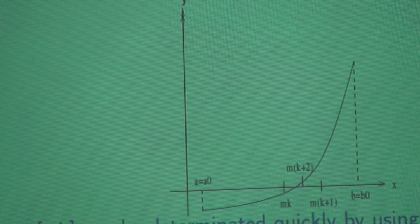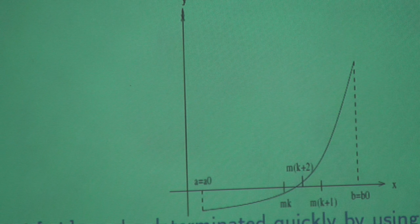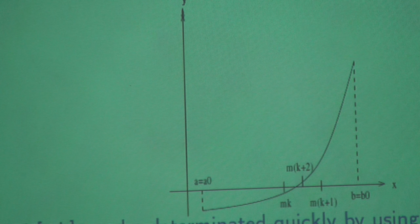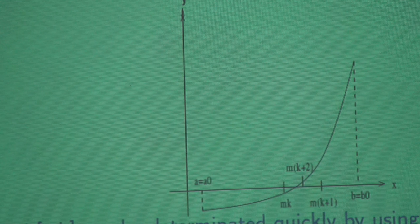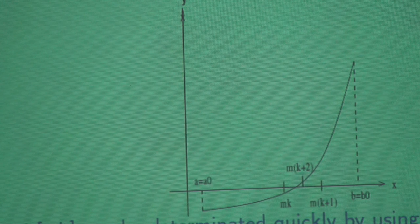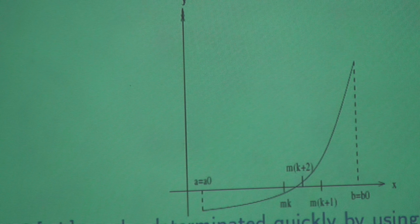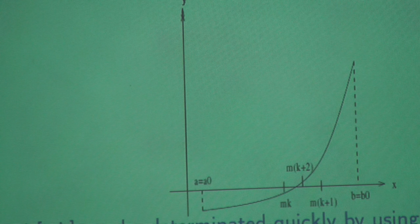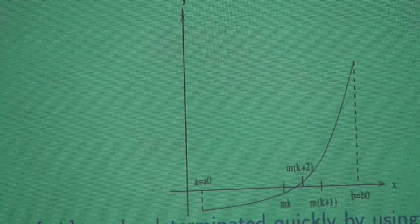That's a very easy method. It converges to a root of the function, which is very important and very nice, but only if the function is continuous. Why is it necessary for the function to be continuous? Can you give me a counter example — a function which is not continuous where this method fails?